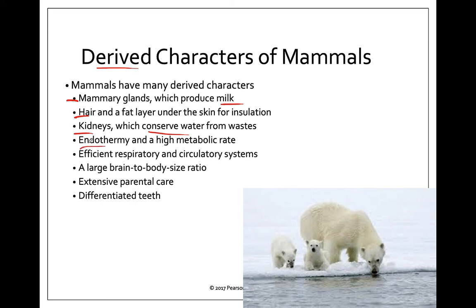Endothermy — we saw some endothermy in birds. This large brain-to-body size ratio means we're going to start to see more development in the brain for more efficient communication, especially things like parent care, which goes along with suckling infants.